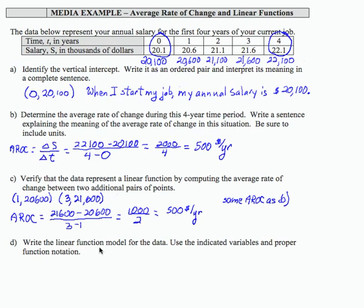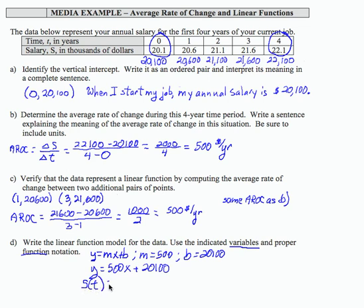So to write the linear function model for the data, I'm going to start with what we know, which is y equals mx plus b and I'm going to substitute in the information that we found in the problem, namely that m is 500 and b is 20,100. So if I do that, I get y equals 500x plus 20,100. But that is not using the variables for the problem and it's not in proper function notation. So to give my final result, I'm going to use the variable from the problem, the input t output s. So S(t) equals 500t plus 20,100 and that is my linear function model for the given data.